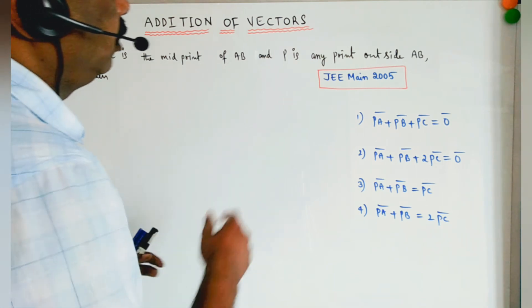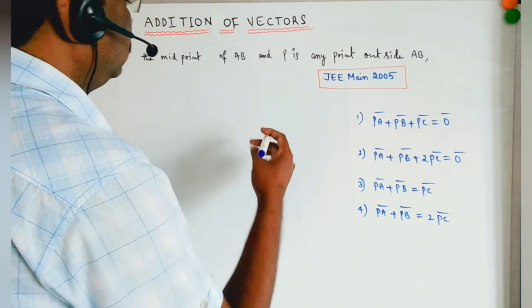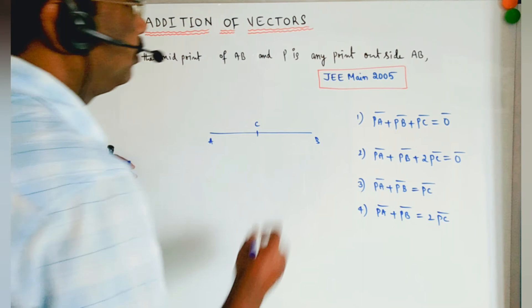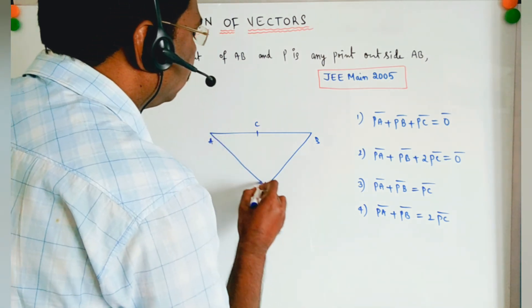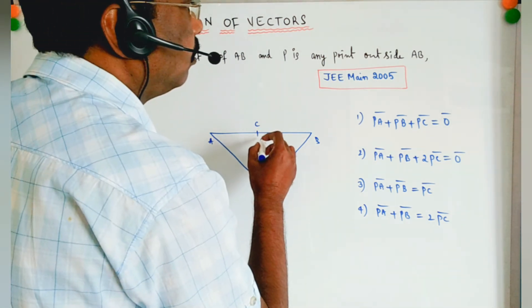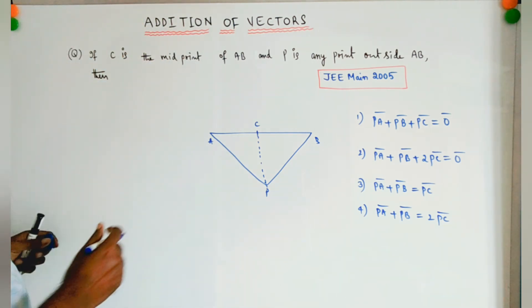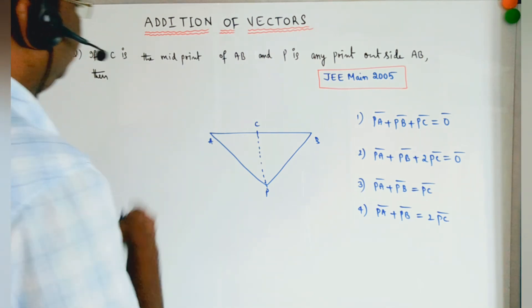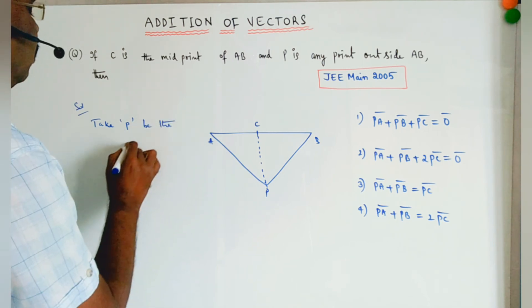Next problem: If C is the midpoint of AB and P is any point outside AB, then what is the condition? Given that C is the midpoint of AB and P is any point outside.